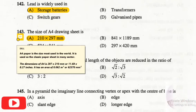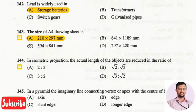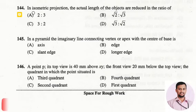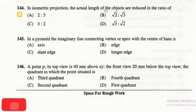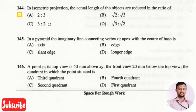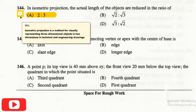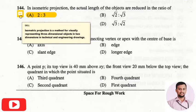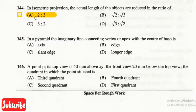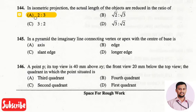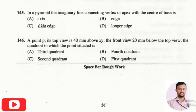The dimension of A4 size paper is 297 × 210 mm and its area is 0.062 m². The next question is: in an isometric projection, the actual length of an object is reduced in the ratio of? The right answer is option one, that is 2:3. Isometric projection is a method for visually representing three-dimensional objects in two-dimensional technical drawings, commonly used in industrial drawings, where the actual length is reduced in the ratio of 2:3.